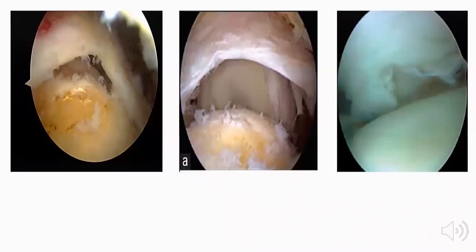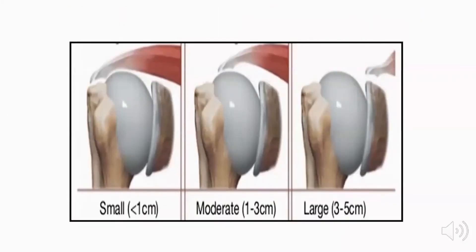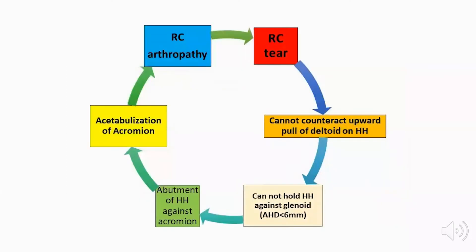This is an arthroscopic view of the different types of rotator cuff tears. The tear could be small (less than 1 cm retraction), moderate (1–3 cm), large (3–5 cm), or a massive tear of more than 5 cm.